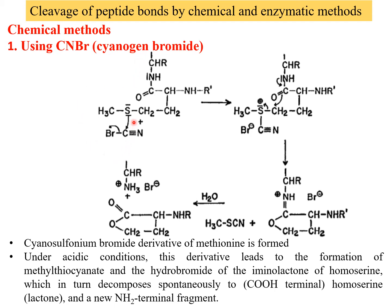The electron density in cyanogen bromide is shifted away from the carbon atom, making it unusually electrophilic, and towards the more electronegative bromide and nitrogen. This leaves the carbon partially vulnerable to attack by a nucleophile. The cleavage reaction begins with a nucleophilic acyl substitution reaction in which bromine is ultimately replaced by the sulfur. In the next step, a cyanosulfonium bromide derivative of methionine is formed under acidic conditions.